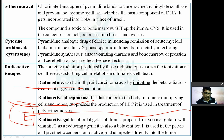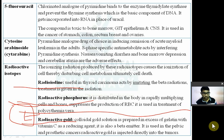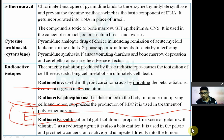Radioactive phosphorus goes to the rapidly multiplying cells in bone and kills those cells by emitting beta rays. Radioactive gold: a colloidal gold solution is prepared using gelatin and vitamin C as a reducing agent. It is also a beta-ray emitter.